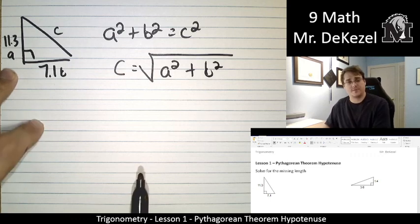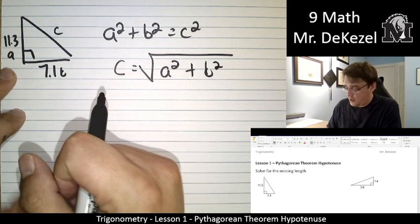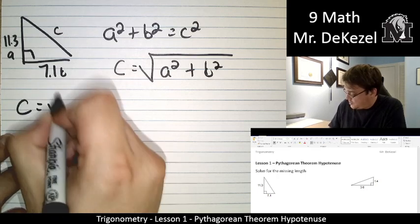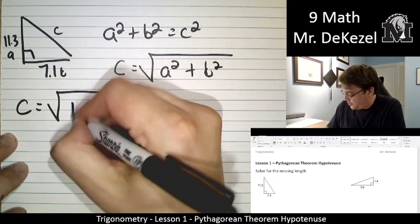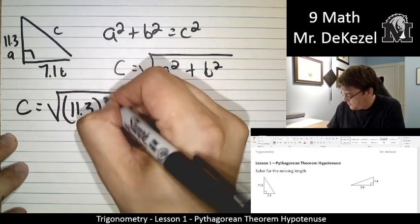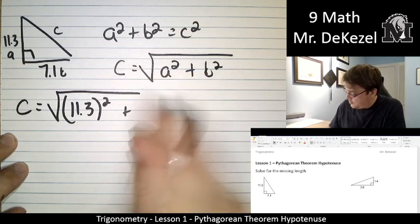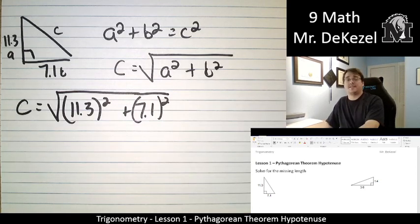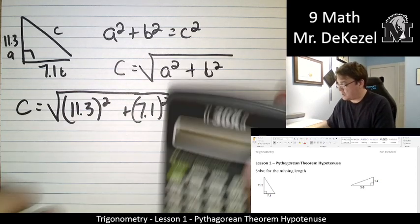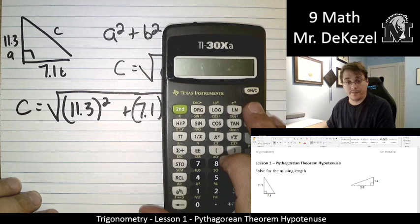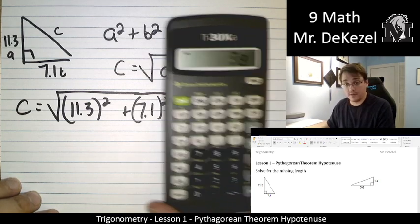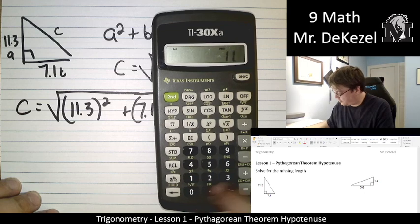So you can see with decimals, this will get a little bit complicated. We can use our calculator. So C is then equal to A is 11.3, and B we said was 7.1. So we're going to do this step by step. We're going to write out everything as we go. So, we have 11.3 multiplied by 11.3.